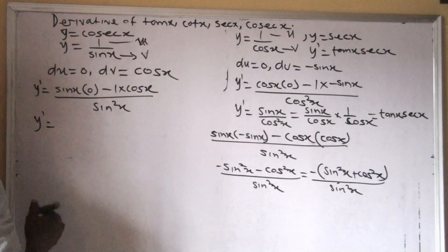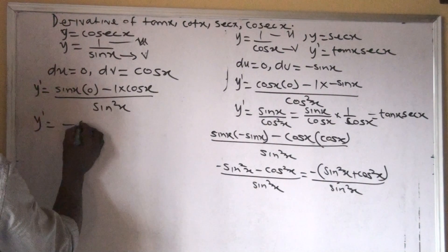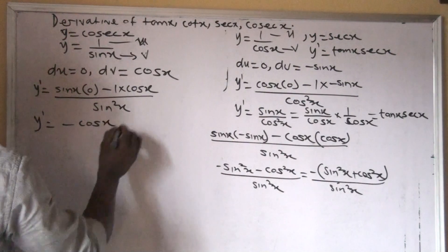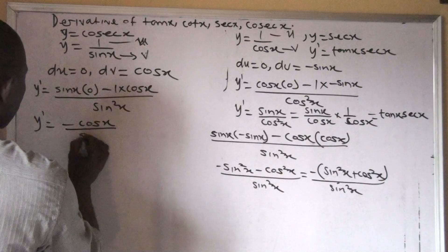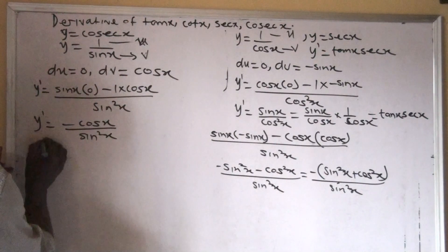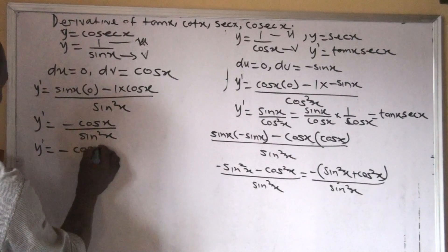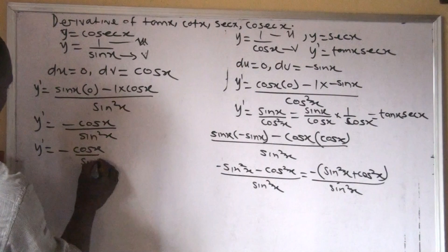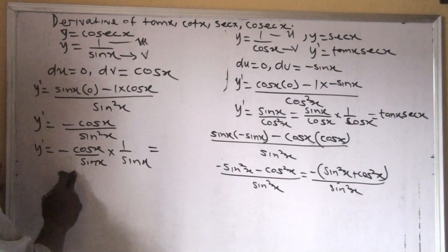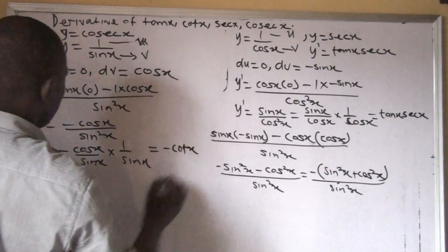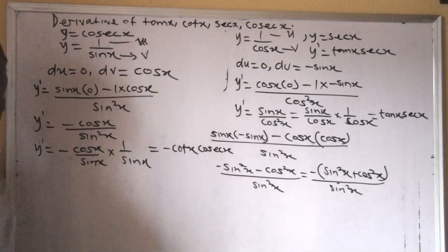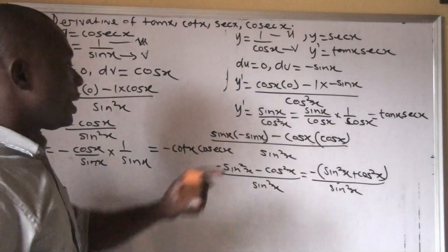So y prime: zero times sin x is zero, minus cos x, over sin squared x. That gives us minus cos x over sin squared x. This simply means y prime equals minus cos x over sin x, times 1 over sin x. And cos over sin is cot, so this gives us minus cot x · cosec x. So the derivative of cosec x is minus cot x · cosec x.